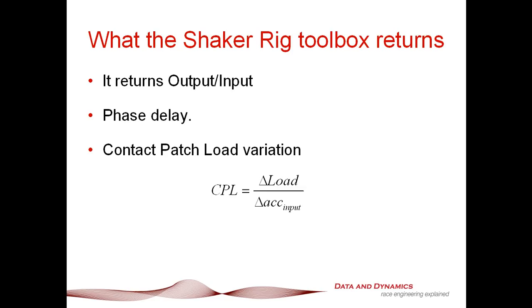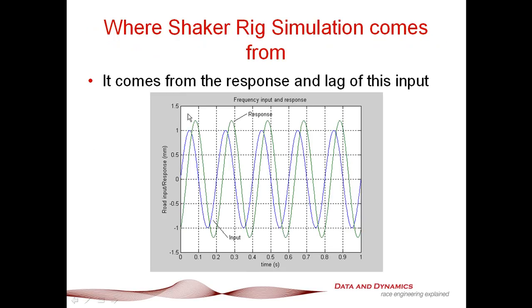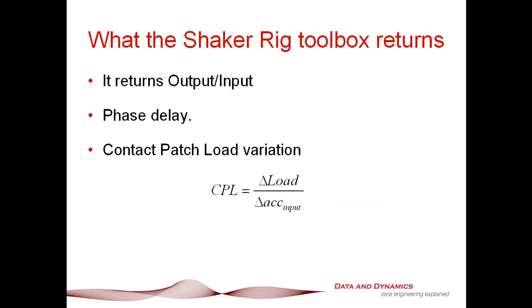Now, what the shaker rig toolbox returns is it returns output over input, as we've discussed. You can also rig this up to look at your phase delay. In particular, it'll quantify how far this gap is. And that's a really useful parameter, in particular just determining how tight the response of the car is going to be. The last thing it returns is contact patch load variation, which is a really good measure of mechanical grip. What this is measuring is the change in load on the change in acceleration input, and that's pretty much averaged over the whole run. So effectively, you can think of the contact patch load variation as that change in load as a function of kilograms.